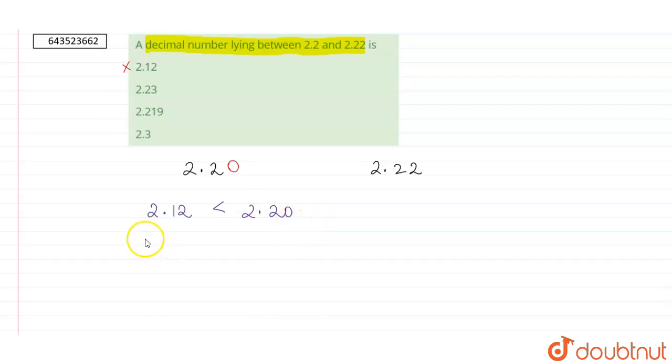Our next number is 2.23. Now 2.23 is greater than 2.22, so this number also does not lie between 2.20 and 2.22.